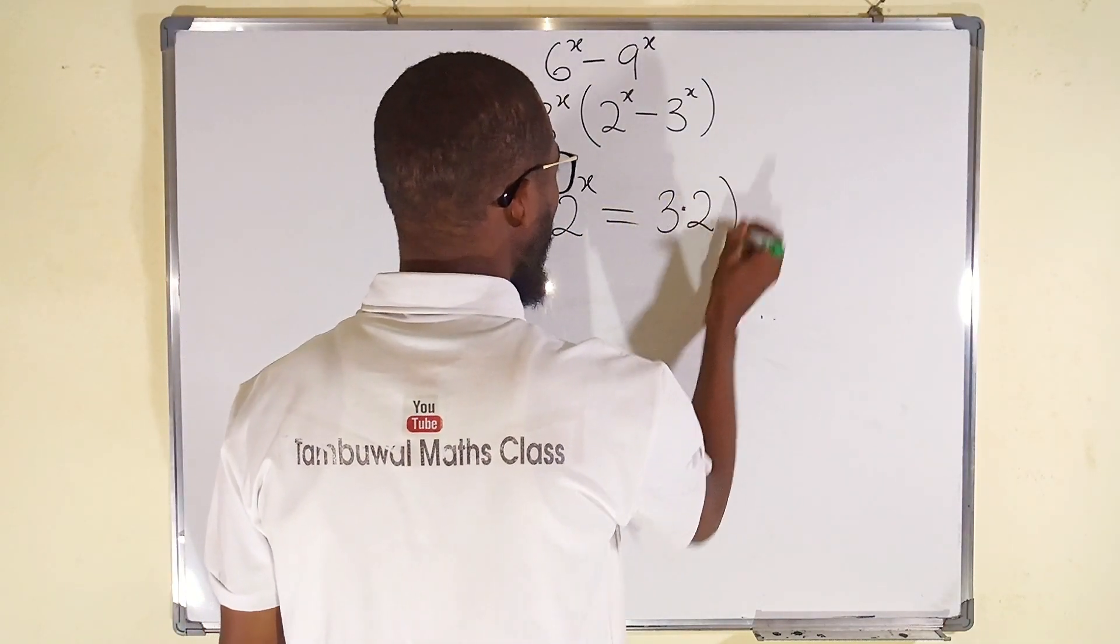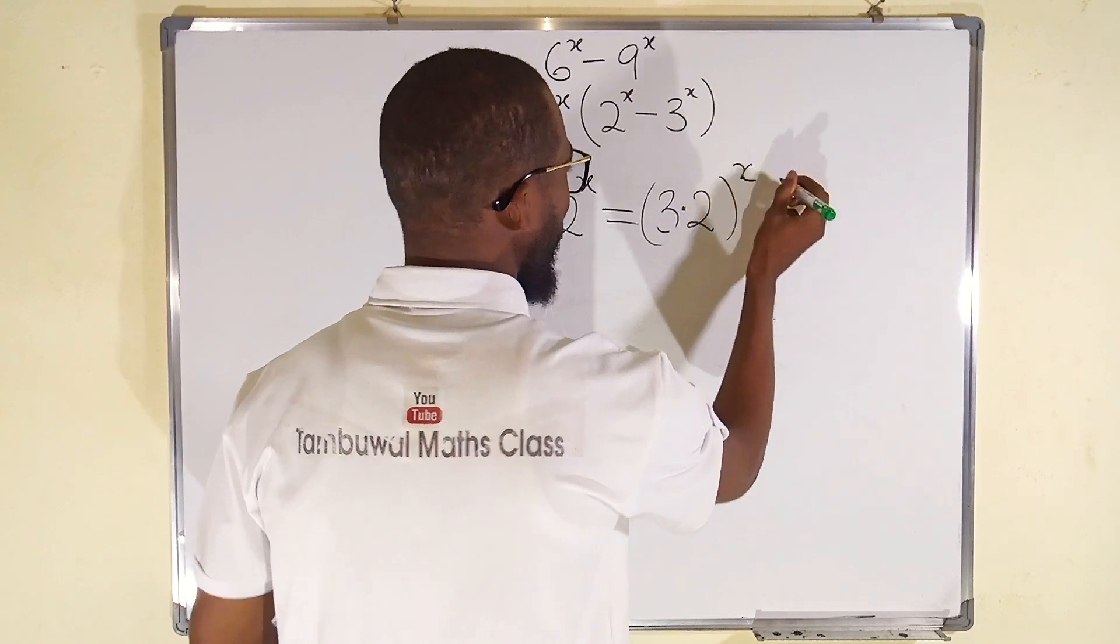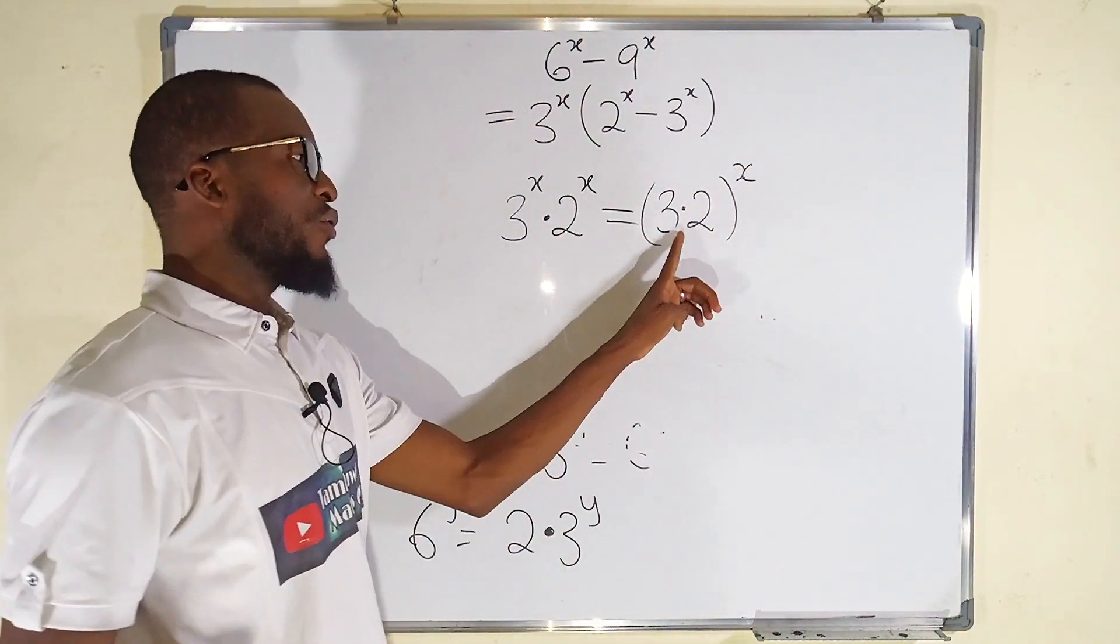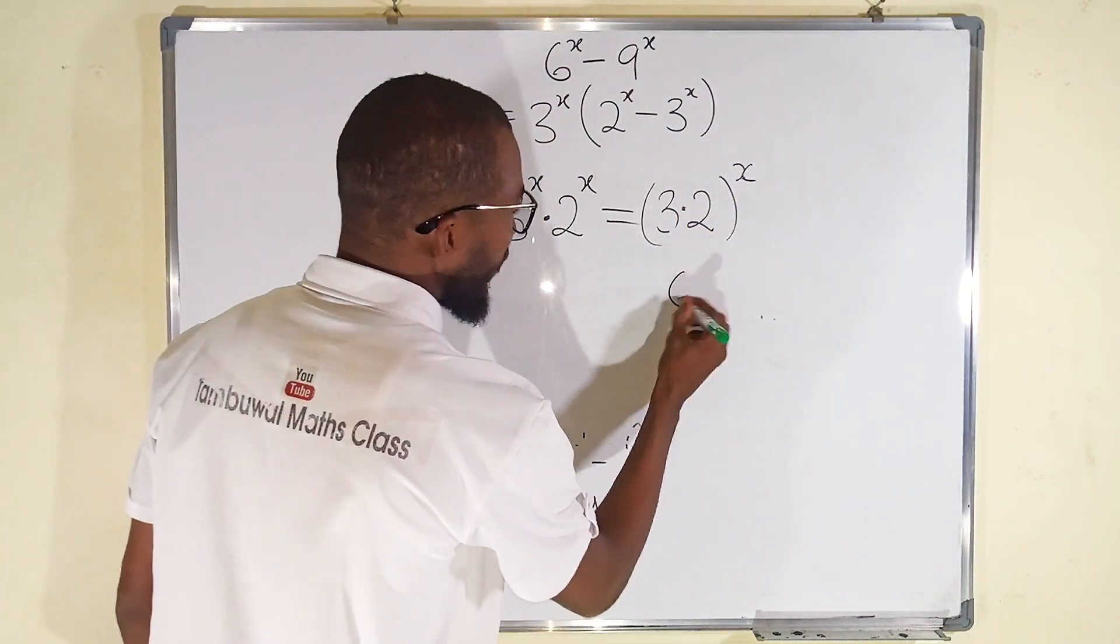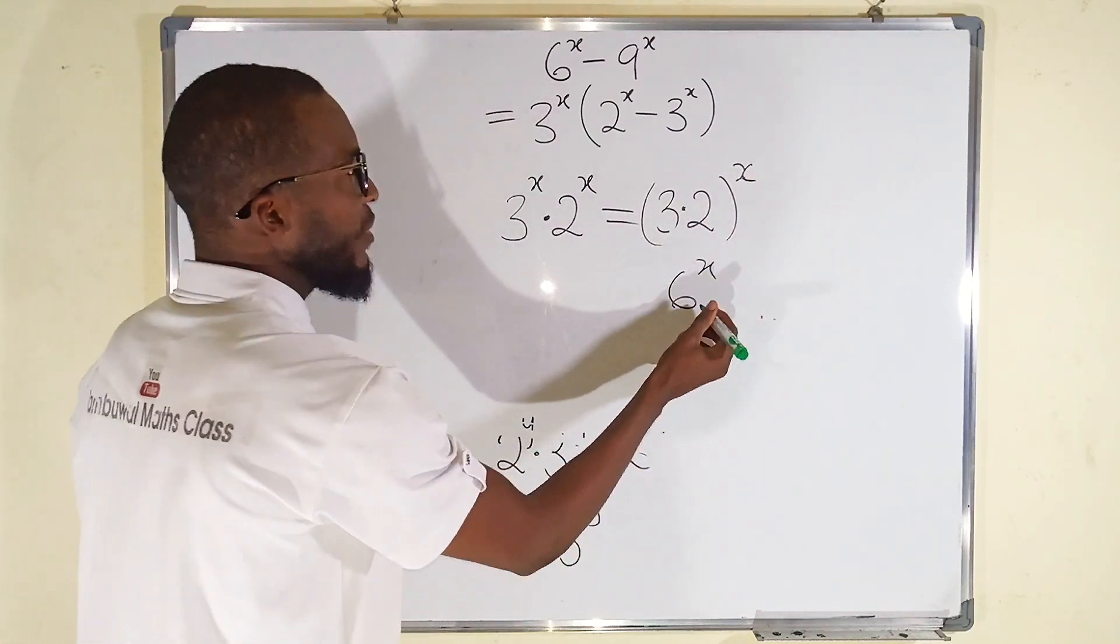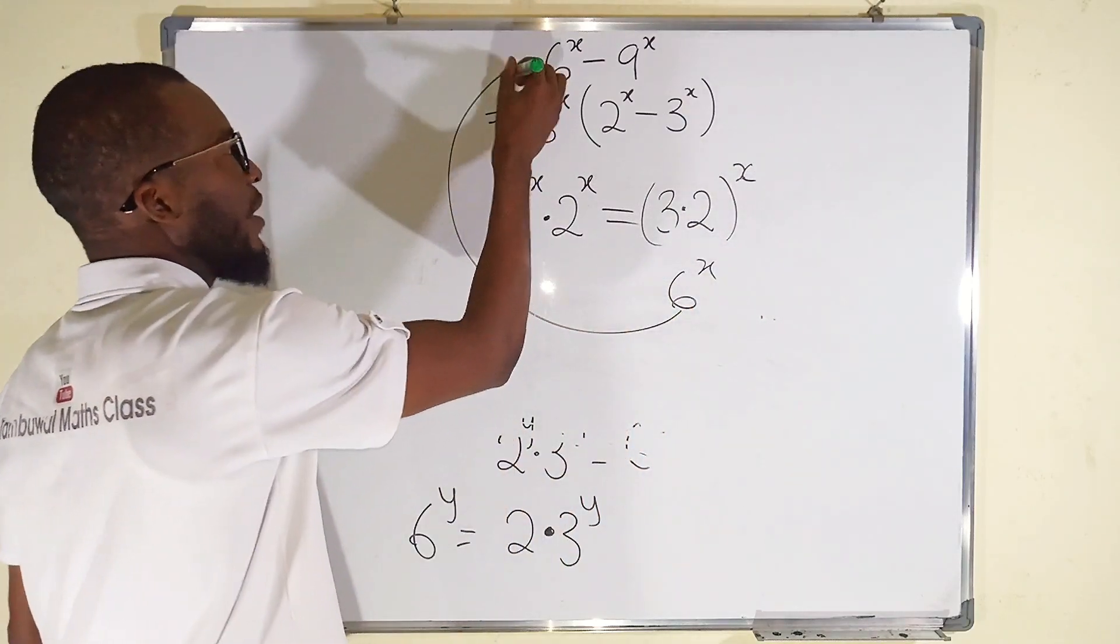3 multiplied by 2, all raised to the power of x. And 3 multiplied by 2, remember, is 6 raised to the power of x. Can you see that? It is exactly equal to this.